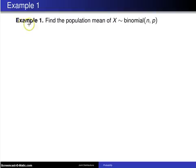That's going to be used in this particular example to find the population mean of X, which has the binomial distribution with parameters N and P.